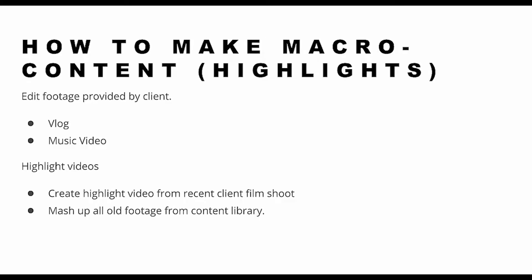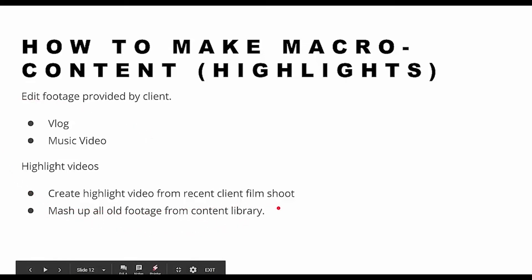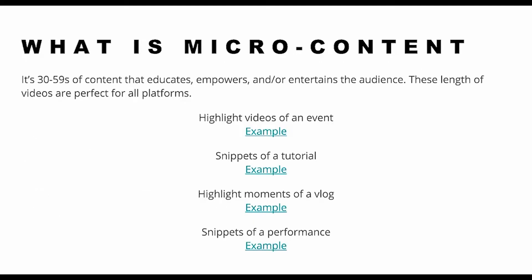How to make macro content is pretty straightforward — you give the footage to a video editor, edit the footage given by the client: a vlog, music video, highlight videos. Create a highlight video from a recent client film shoot longer than a minute or two minutes. Create content to build and give value — educate, entertain, empower — or you can mash up all the old footage from the content library. For example, we have a client called Show Off Dolls with content going back to 2013, and we've been mashing up their content from that year to 2015 and 2016 — creating a throwback moment and showcasing the growth of the team.